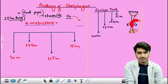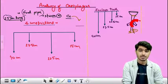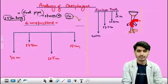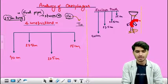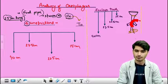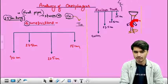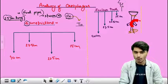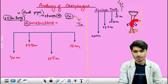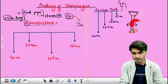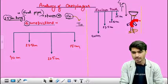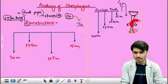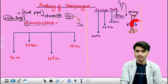The esophagus, or foodpipe, has a length of 25 centimeters, starting from C6 and ending at T10. During the whole course of the esophagus, we have four constrictions. We measure the distance from the upper incisors to each constriction. The first constriction is the pharyngoesophageal junction, present at 15 centimeters from the upper incisor.